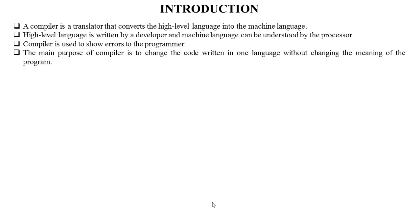An interpreter is a language processor that itself performs the action indicated in a user program without generating a machine language program. The main purpose of a compiler is to change the code written in one language without changing the meaning of the program.